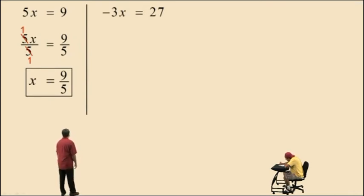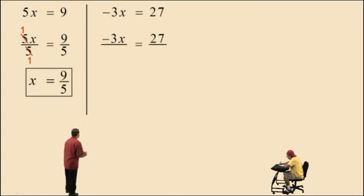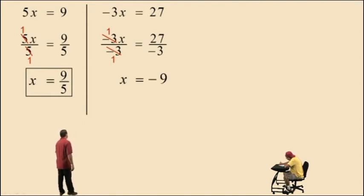Here we have negative 3x equals 27. To isolate the multiplication from that variable, the negative 3 times x, you've got to divide both sides by a negative 3 because a negative divided by negative is a positive, right? And that gives you 1x. Remember, whatever you do to the left-hand side, you have to do the same thing to the right-hand side of your equation. And so 27 divided by negative 3 is a negative 9, and that is your answer there.